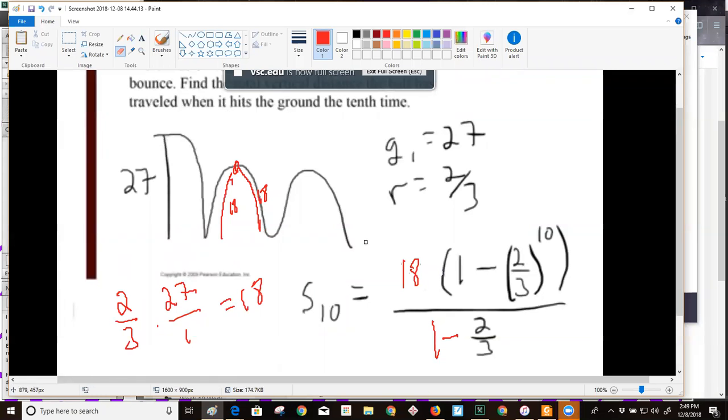Because the first bounce would be when it comes back up 18, right? I'm pretty sure this is the way to do it. I'm going to start with 18 as my first term, find this sum, then double it because it's going up and then down.